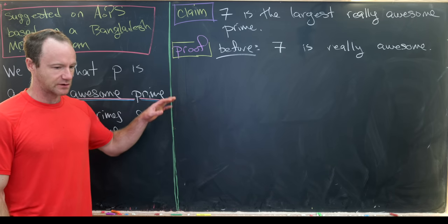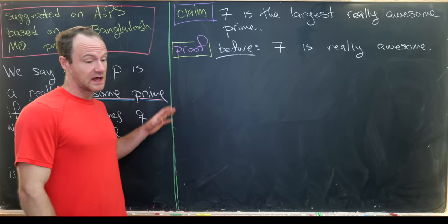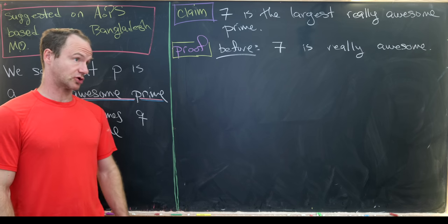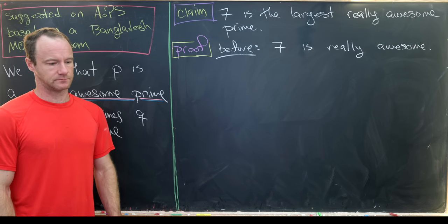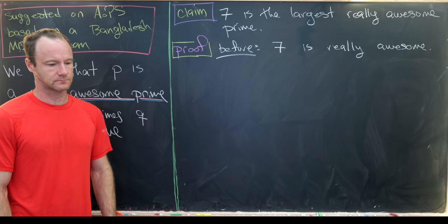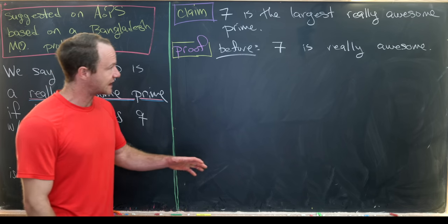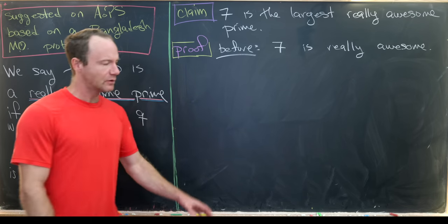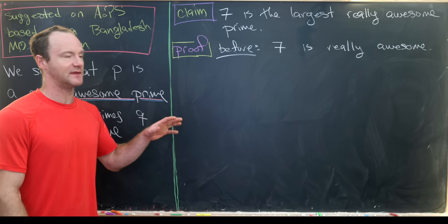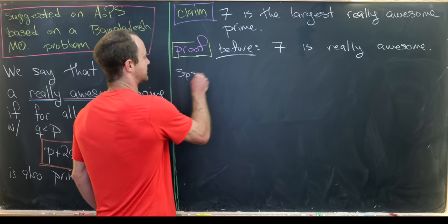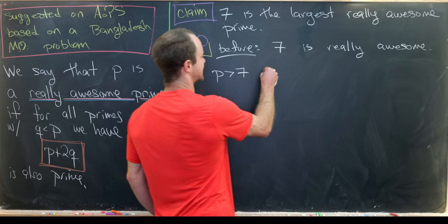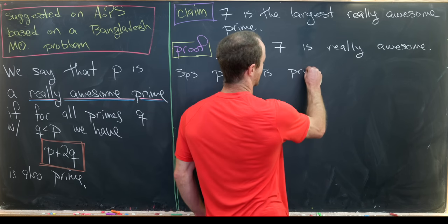Now we want to show that if we have a larger prime, then it cannot be awesome. So let's suppose that p is bigger than 7 is prime.